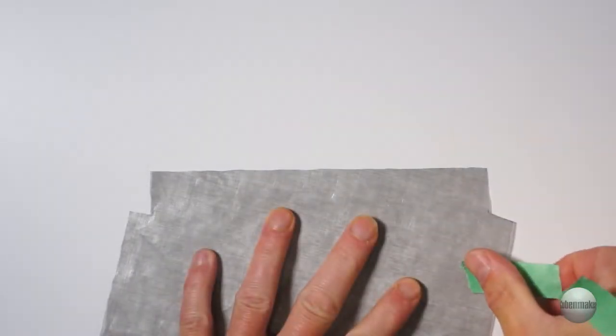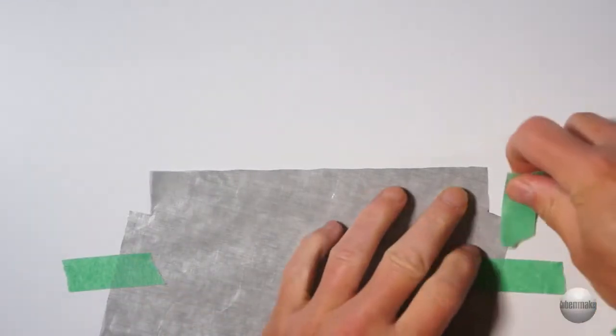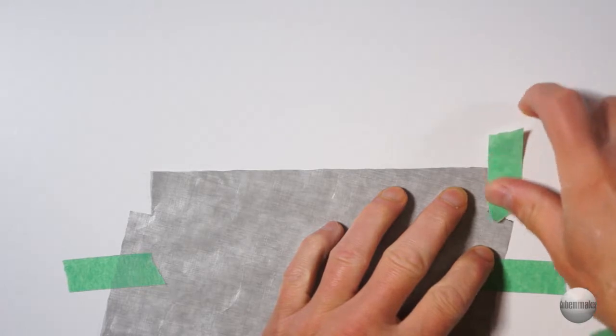Now it's time to start taping the seams. First I tape the piece down using green painter's masking tape. Then I tape over the ends of the seams.